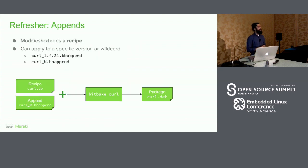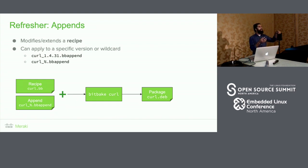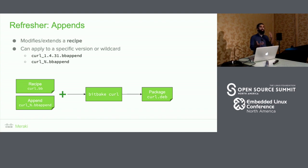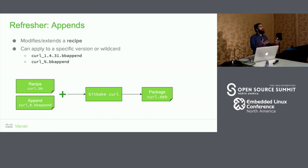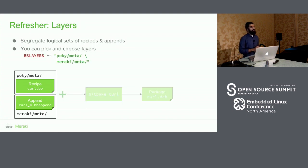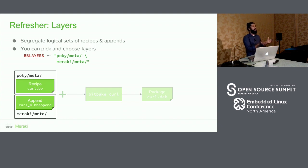We also have the concept of appends. An append lets you modify an existing recipe without touching the original BitBake file, keeping your changes separate from upstream — very useful when maintaining things since you don't want to keep modifying upstream as merges become a problem. Appends can be wildcarded using a percentage sign, meaning the append applies to any version of the recipe, or they can be version-specific. Finally, layers let you group recipes, modifications, and classes into separate directories, keeping them contained and logically organized.